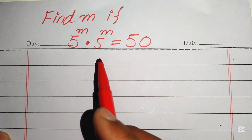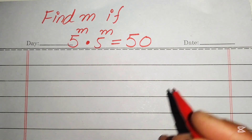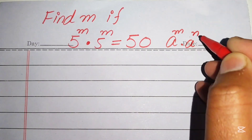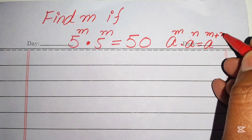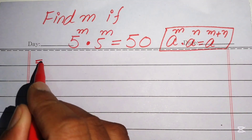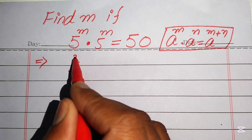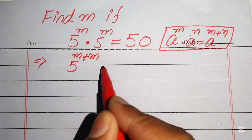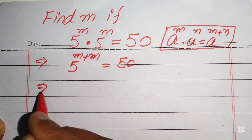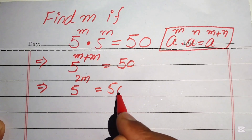The first step is to apply the exponential law: a^m times a^n equals a^(m+n). Applying this law, we add the exponents of the two terms, so 5^m times 5^m becomes 5^(m+m), which equals 5^(2m) = 50.